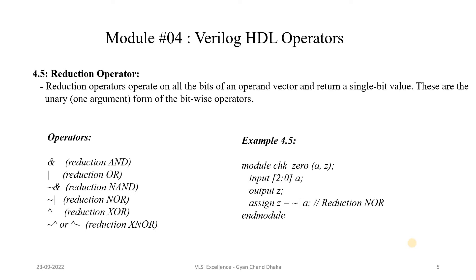The next type of operator is the reduction operator. The reduction operator operates on all the bits of an operand vector and returns a single bit value. Importantly, the reduction operator operates on only a single operand. Reduction AND is represented the same as bitwise AND, but how it is used in the design determines whether it is bitwise or reduction. We also have reduction OR, reduction NAND, reduction NOR, reduction XOR, and reduction XNOR.